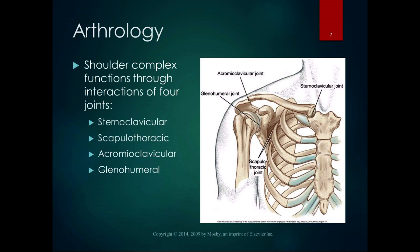I also recently worked with a lady who had a fractured clavicle — same thing. Her clavicle was fractured and it really compromised the motion in all her other shoulder complex joints. So the shoulder complex functions through interactions of the sternoclavicular joint, the scapulothoracic joint, the acromioclavicular joint, and the glenohumeral joint. A lot of times when we think of the shoulder, we think of the glenohumeral joint and forget about the other three, but they're very important to glenohumeral motion.